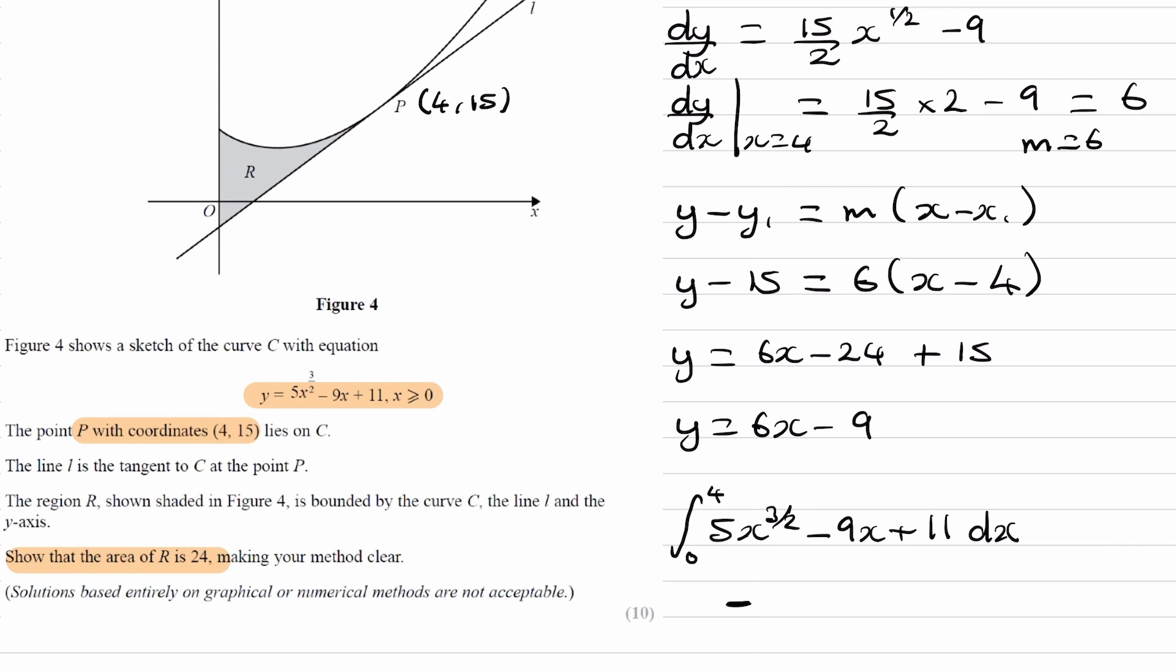And then we would take away the integral of the line. So the line is 6x minus 9, and the limits for this would also be 0 and 4. This will give you the area R.